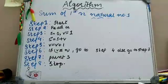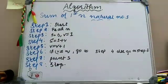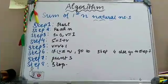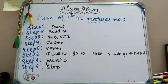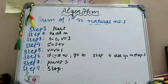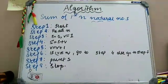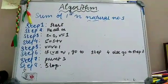So first step is start and I want to find the sum of first 3 natural numbers. That is 1, 2, 3, right? So 1 plus 2 plus 3 is 6. So the required output is 6.